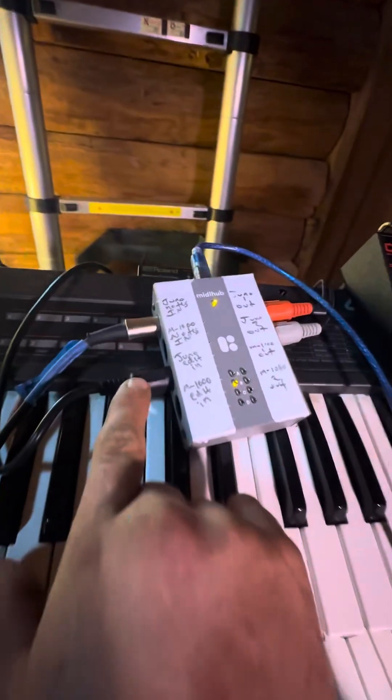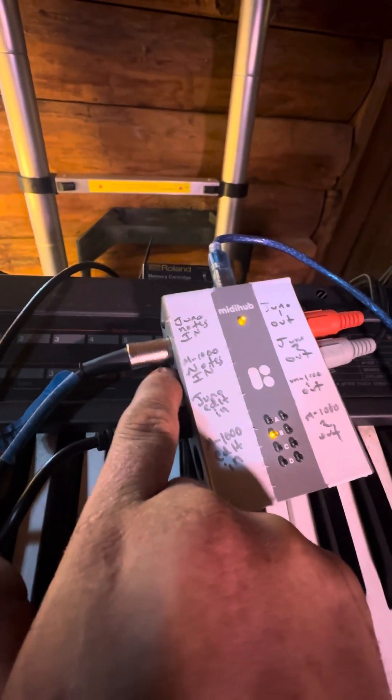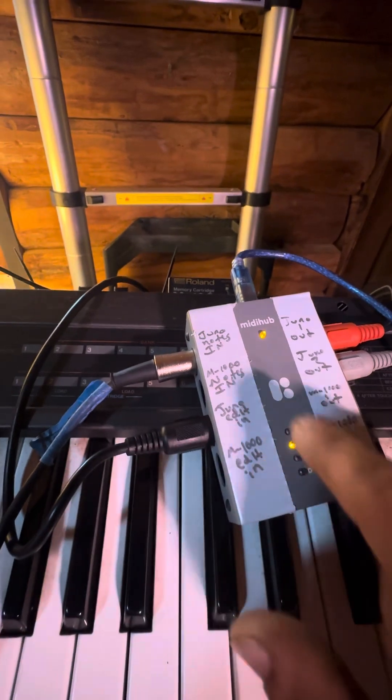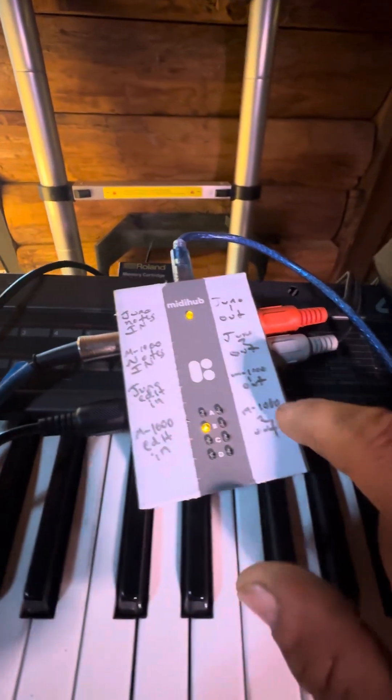Same thing, I'll have Matrix 1000 notes will come in here. The Matrix 1000 editor will come in here, and it will parse the notes to output C and D.